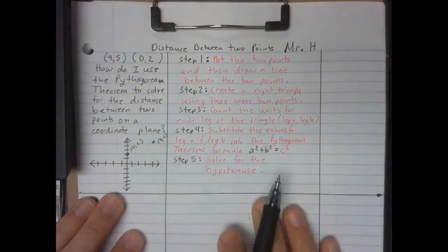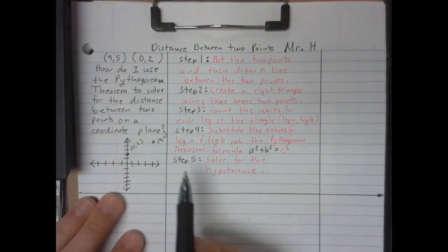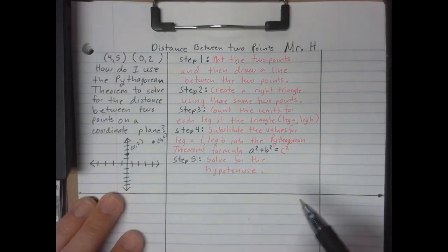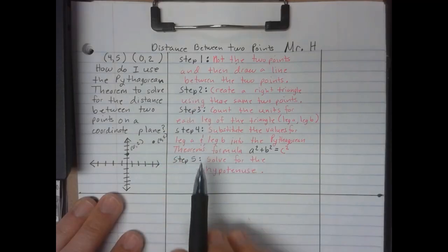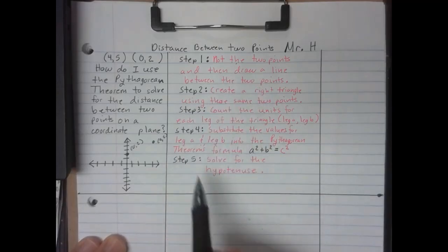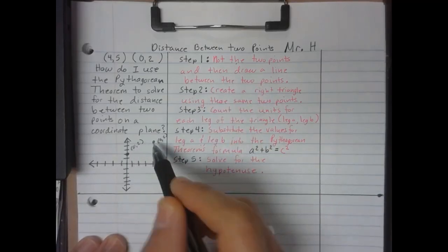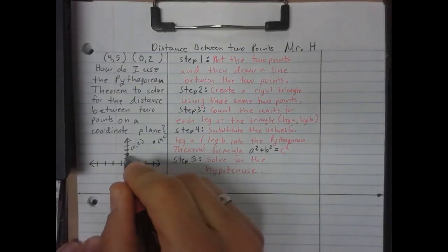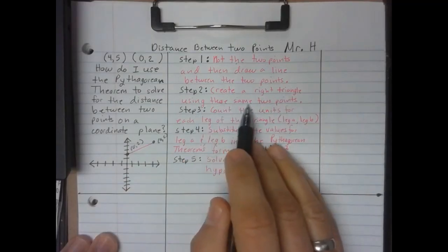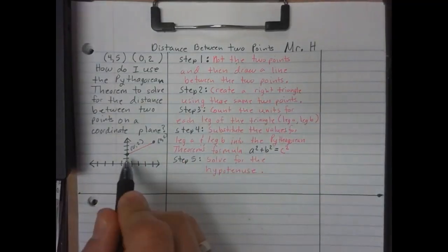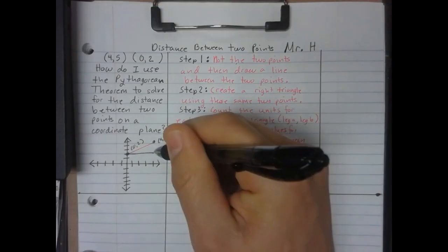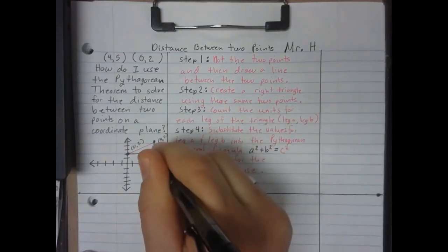At this point I'm actually watching the video inside Google Classroom and doing each step along with the instruction in the video. The steps are also on my notes since I just wrote them down. Step one: plot the two points (0,2) and (4,5), and draw a line between them. Step two: create a right triangle using these same two points — I go straight over until I'm even with (4,5), then go up, making a right angle there.